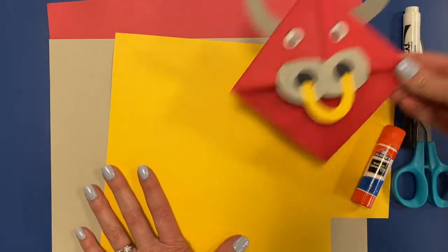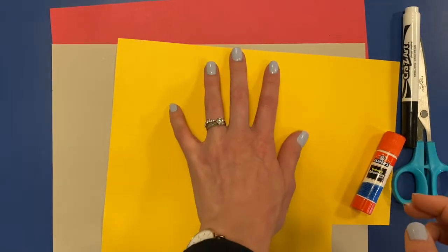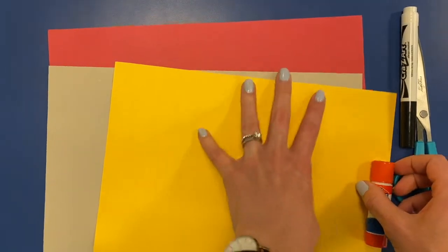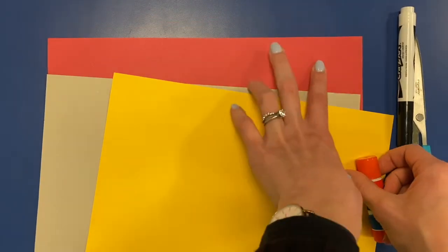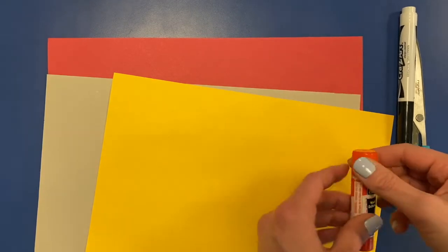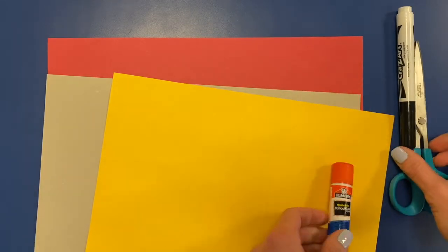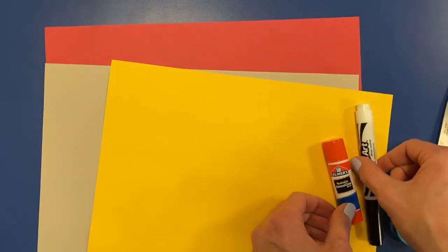So to do this at home you're going to need three different pieces of paper. The colors don't matter but I'm gonna use red, gray, and yellow. You're gonna need a glue stick, some scissors, and a black marker.